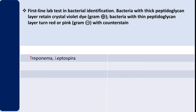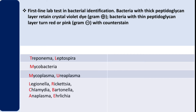Firstly we have Treponema pallidum, the causative agent of syphilis. Then we have Leptospira, Mycobacteria, Mycoplasma, Ureaplasma, Legionella, Rickettsia, Chlamydia, Bartonella, Anaplasma, and Ehrlichia.